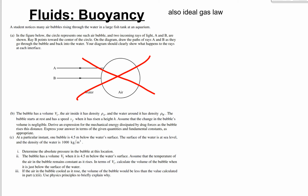Another buoyancy question — we'll skip part a (optics) and go to part b. An air bubble is floating upward with volume v, traveling a distance h, and reaching a final speed vf. We need to derive an expression for the mechanical energy dissipated by drag forces.